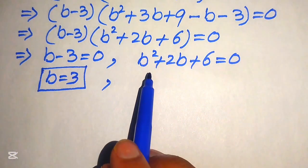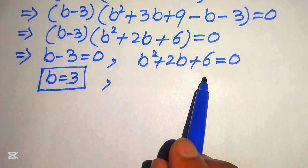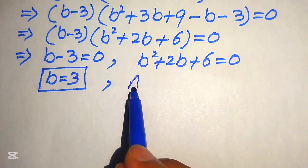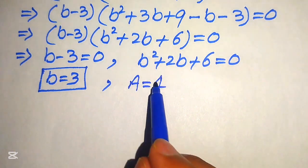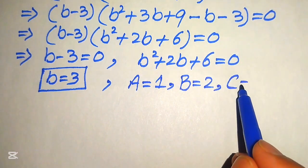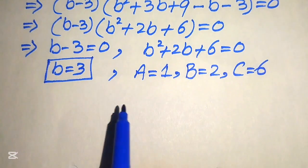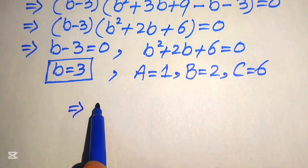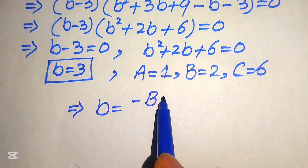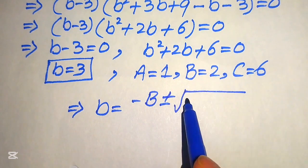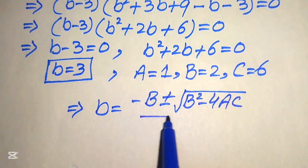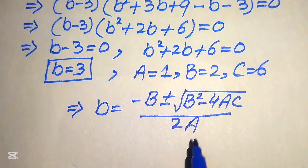To apply the quadratic formula, we identify the coefficients: capital A equals 1, capital B equals 2, and capital C equals 6. The quadratic formula is b equals negative B, plus or minus the square root of B squared minus 4AC, all divided by 2A.